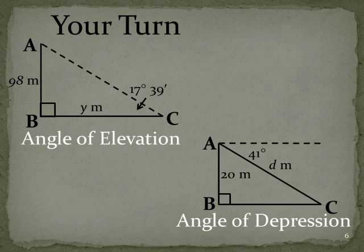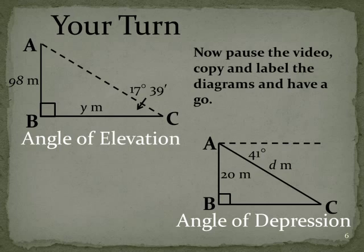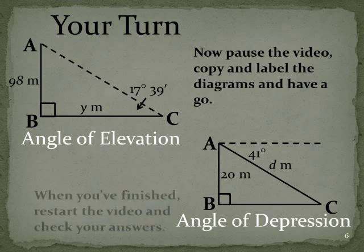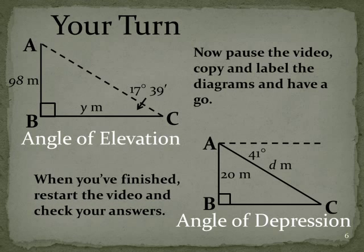Here we have an alternate one. This is our angle of depression question, so you're looking down from A to C. A typical worded question to go with this is there's a bird sitting at the top of a 20 meter flagpole. He's looking down to a worm that's on the garden at point C. The angle of depression is 41 degrees. What's the shortest distance he has to fly to be able to get his worm? Now what I'd like you to do, pause this video, copy and label the diagrams and have a go. When you've finished, restart the video and check your answers.